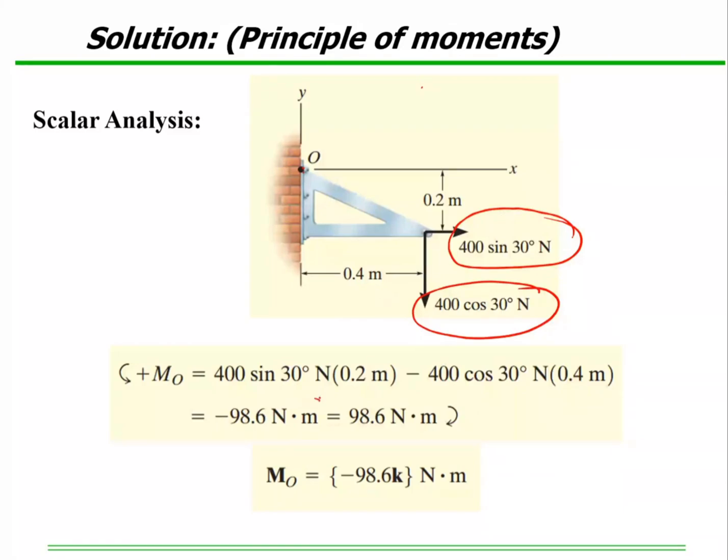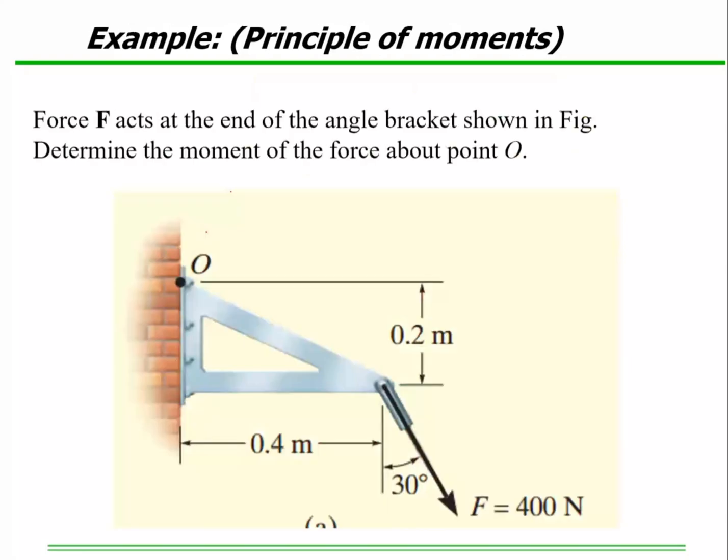So look, he put a negative sign here. There's no negative sign here because the direction has been mentioned. Best ways you stick with this one. So you realize that we cannot find directly the perpendicular distance. That was not possible. So the easiest way out was to split it into two components. And we had the distance for each force component.